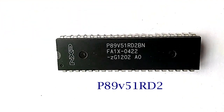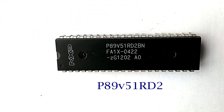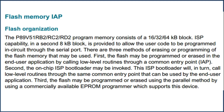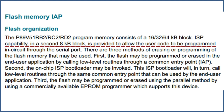Next, NXP's P89V51RD2. This IC has all the features of the 89S52, but has 64KB of program memory and supports speeds up to 40MHz. This IC also supports ISP programming like Atmel's S51 and S52, but more importantly, this IC doesn't require any external programmer, as it comes with an inbuilt bootloader program which can communicate with a PC directly via a COM port.